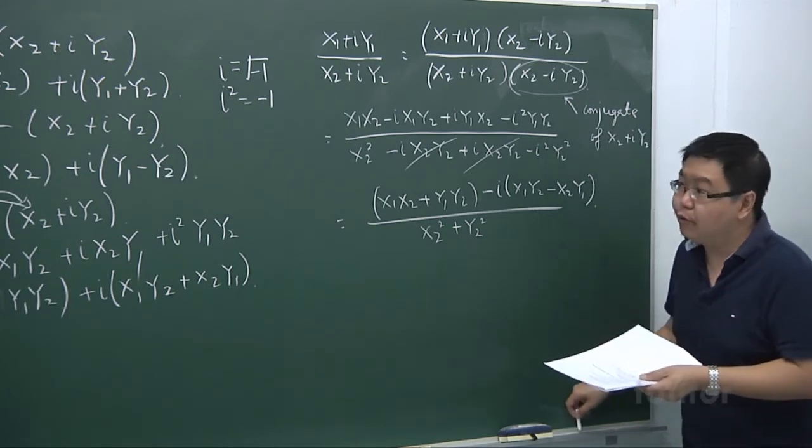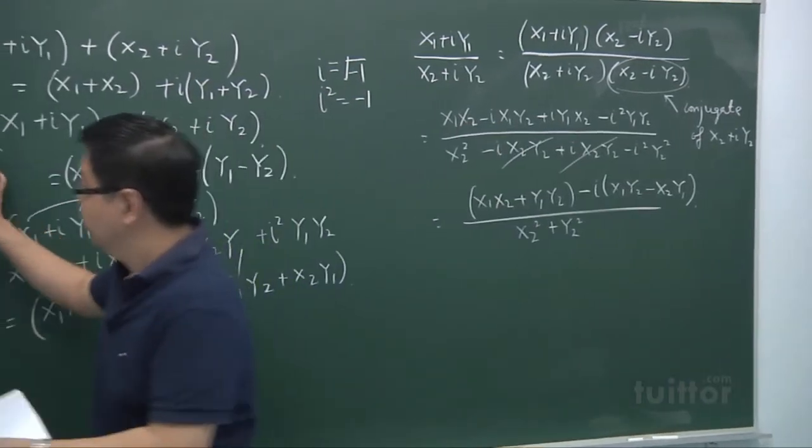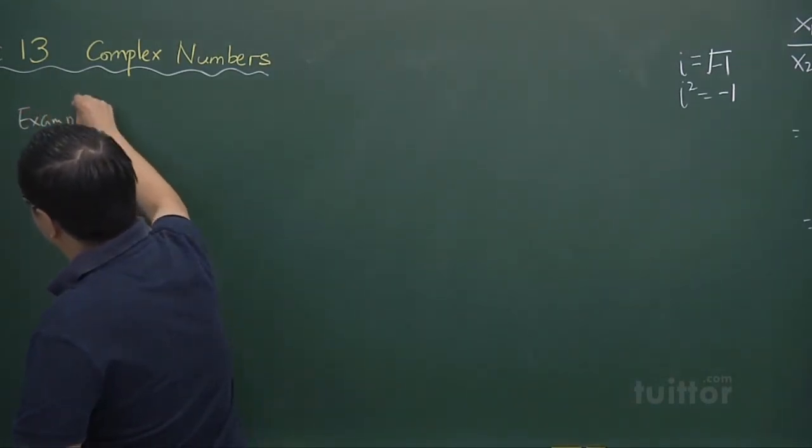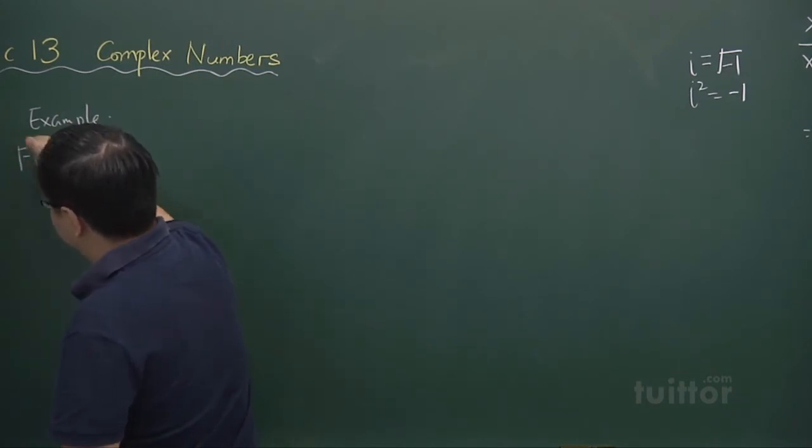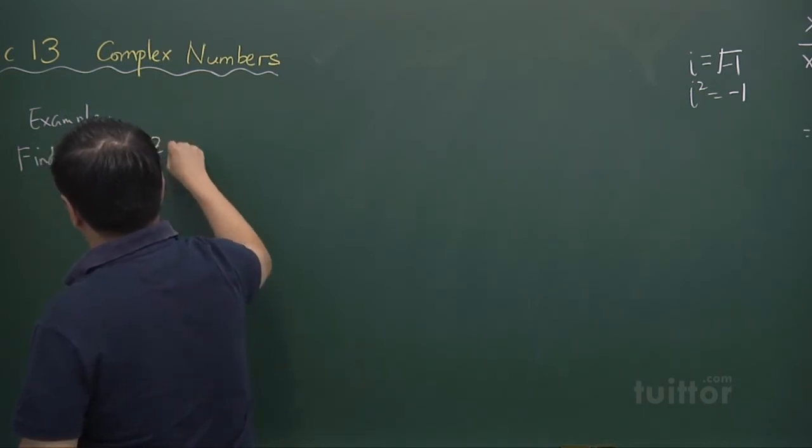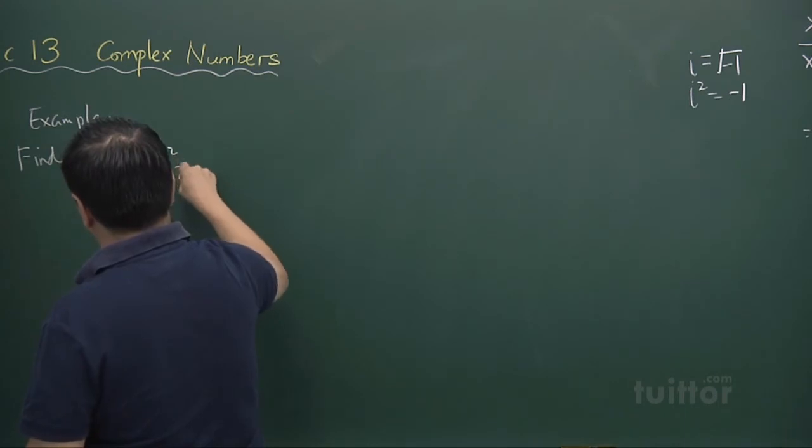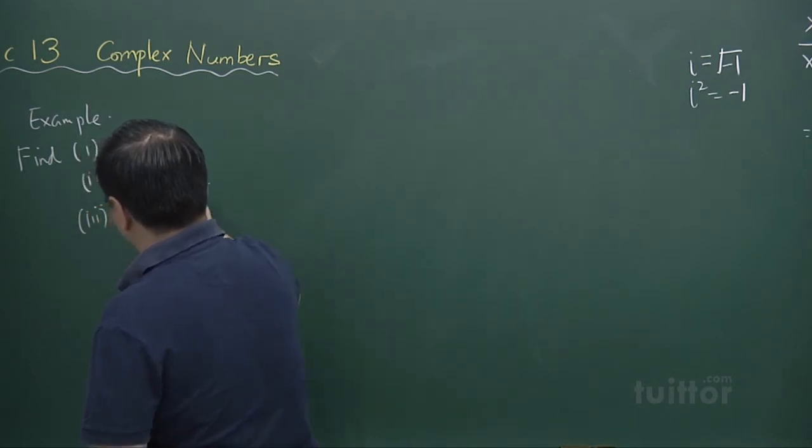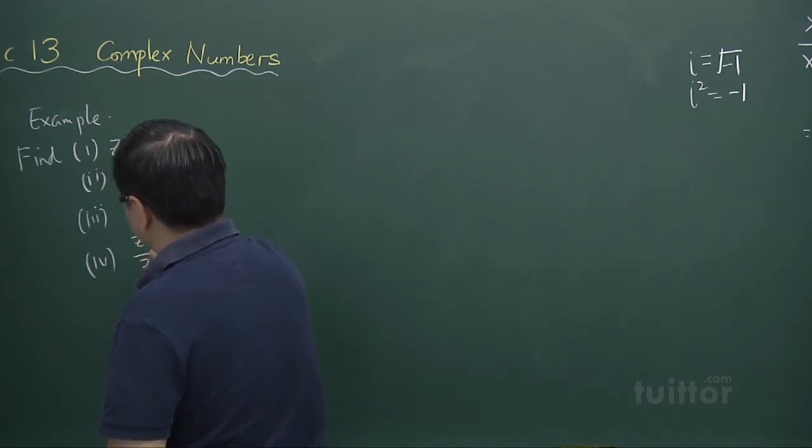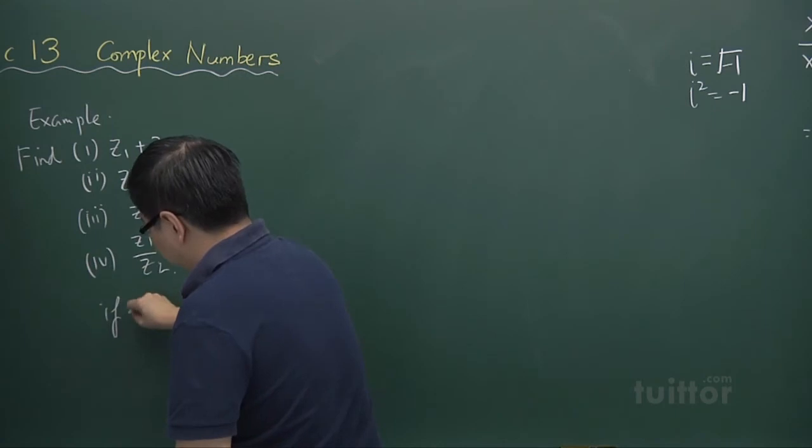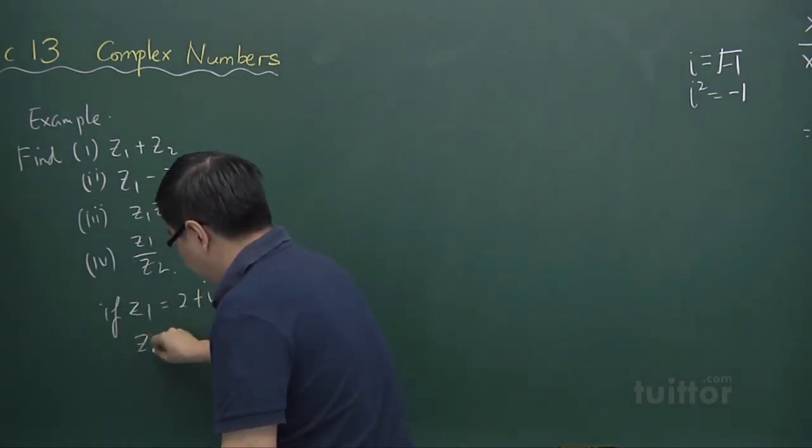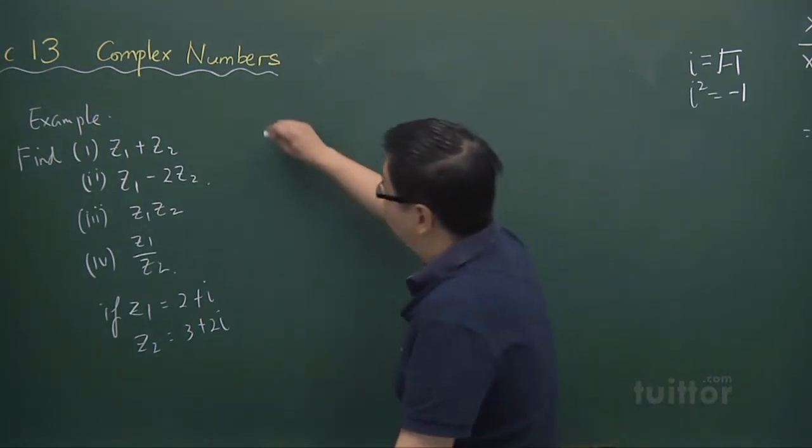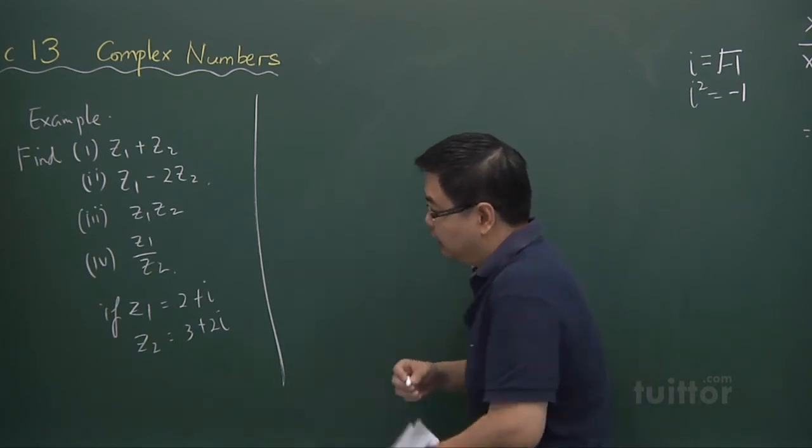Let me just give some examples this time around numerically. So suppose you may want to copy this example. Find part 1, z1 plus z2. And part 2, z1 minus 2z2. And part 3 is z1 times z2. And part 4 is z1 divided by z2. If my z1 is 2 plus i and z2 is 3 plus 2i. Simple example like this. Just go through the motion about all the various operations on the z1 and z2.